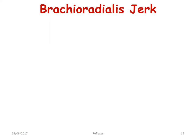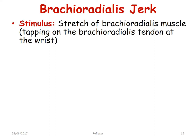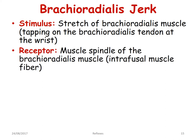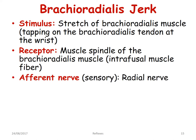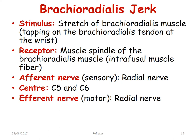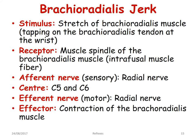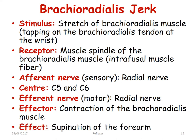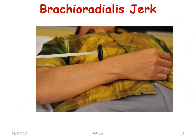Next, the brachioradialis jerk. Stretch of the brachioradialis muscle is brought about by tapping on the brachioradialis tendon near the wrist. The receptor is the muscle spindle of the brachioradialis muscle. Afferent sensory nerve is via the radial nerve. Centers are C5 and C6. Efferent nerve is also via the radial nerve. The effector is contraction of the brachioradialis muscle leading to supination of the forearm. The brachioradialis jerk is elicited near the wrist.